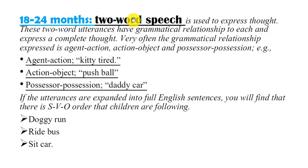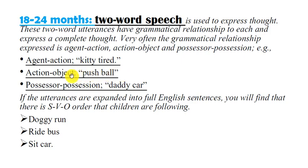The second stage in semantic development occurs at about 18 to 24 months of age. Two-word speech is used to express thought. These two-word utterances have grammatical relationships to each other and express a complete thought. Very often the grammatical relationships expressed are agent-action, action-object, and possessor-possession. For example: agent-action 'Katie tired,' action-object 'push ball,' possessor-possession 'daddy's car.' When expanded into full English sentences, children are following a subject-verb-object order, for example 'doggy run,' 'ride bus,' 'set car.'